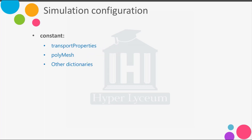In the constant directory, we always introduce the transport properties like viscosity, thermal diffusion, or thermal conductivity. When we generate the mesh, we get a new directory named polyMesh inside constant. In polyMesh, you can find information about the points, faces, and cells generated by blockMesh or other utilities to convert a mesh from another software. For more complex flow modeling, we may also find dictionaries like thermophysical properties or thermodynamic properties in the constant directory.